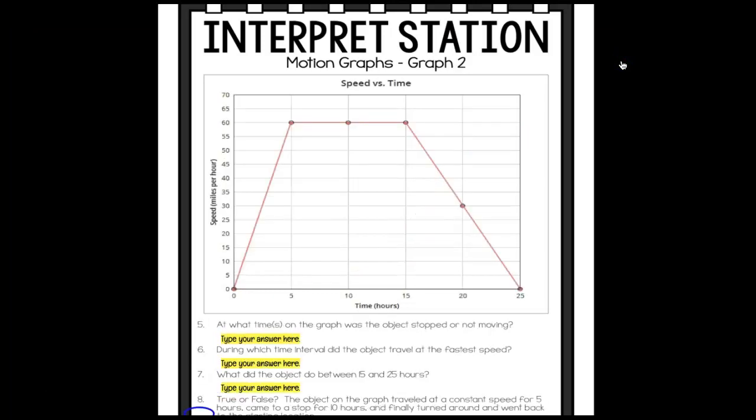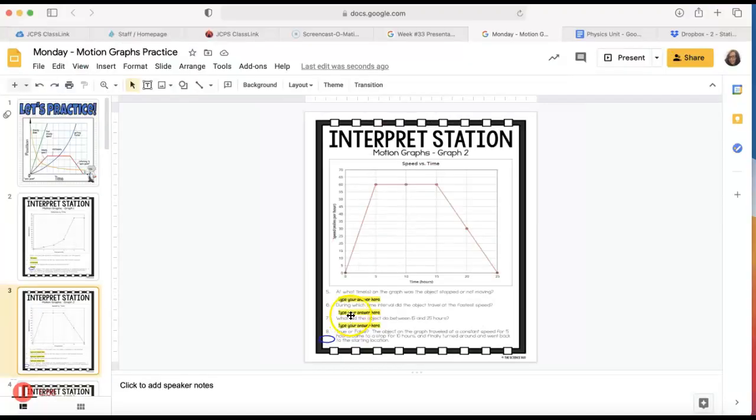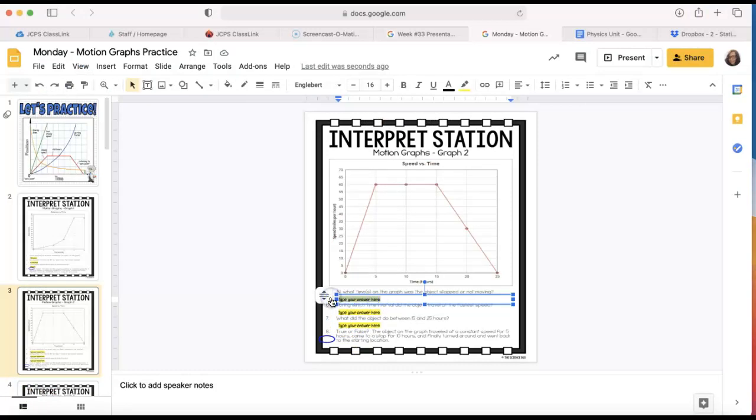Now motion graph 2. This time you'll notice it's changed on us. This is a speed versus time graph. So instead of seeing distance over here, we now have the speed of the object over here, and then we have time down here. Your time is in hours, your speed is in miles per hour. Number 5 says, at what time on the graph was the object stopped or not moving? This horizontal line no longer means that it stopped. This is now a speed versus time graph. So now this means that as hours went by, the object was traveling at 60 miles per hour that whole time. That's like having your car on cruise control. That's a constant speed on a speed versus time graph.